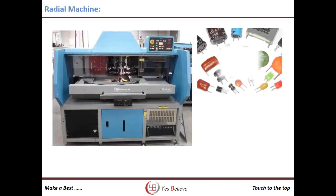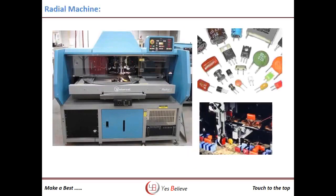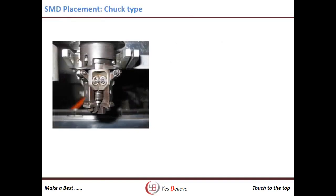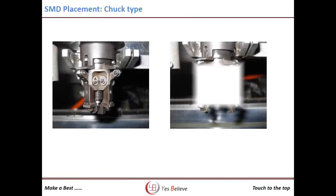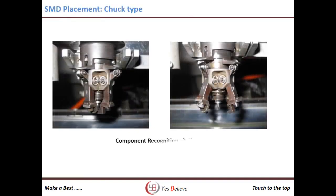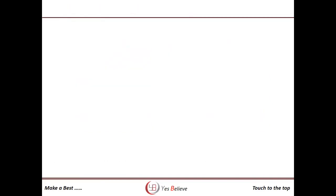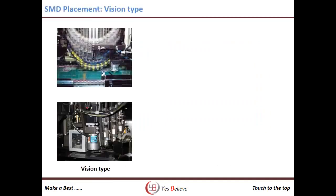With the radial machines, when SMT components came into existence, the first machine used for component placement was the chuck type. Then the vision type, high-speed rotary, and gantry machines came into the market.